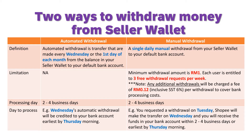Just a quick recap on the general knowledge about the withdrawal methods on Shopee. Basically there are two ways to withdraw money from your seller wallet. The first one will be automated withdrawal, which will be transferred automatically every Wednesday or the first day of each month from your seller wallet to your bank account. It only needs a one-time setting.